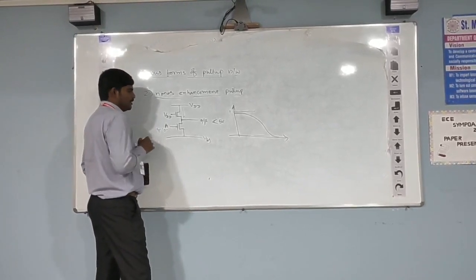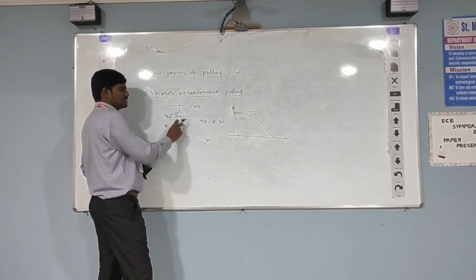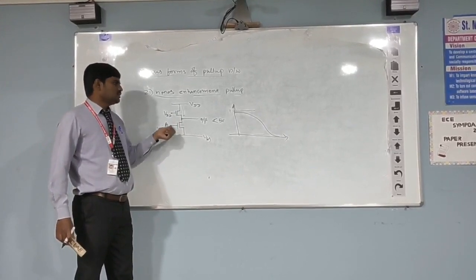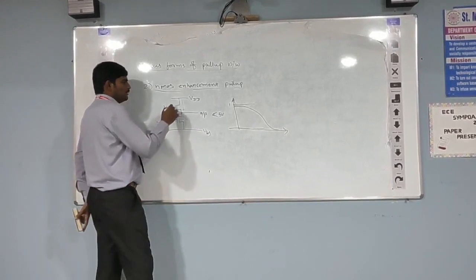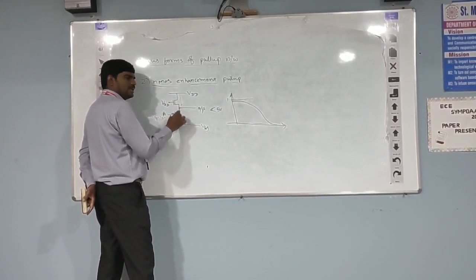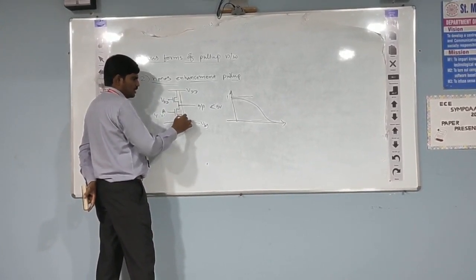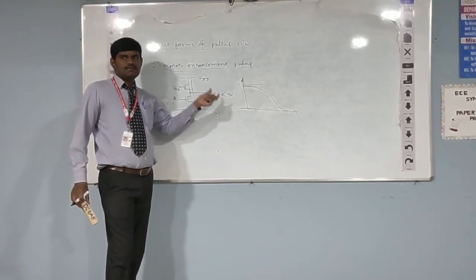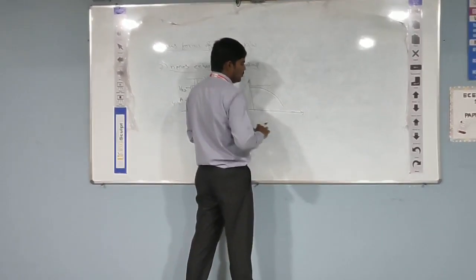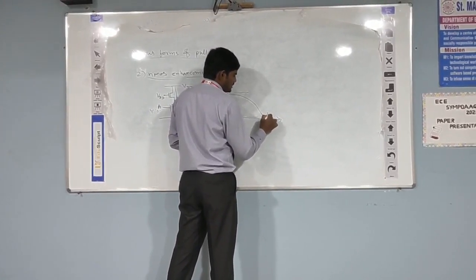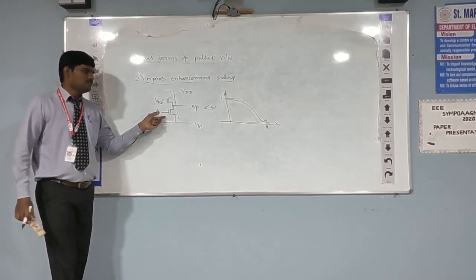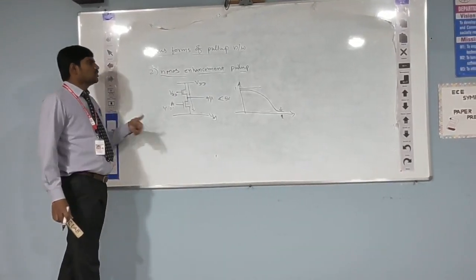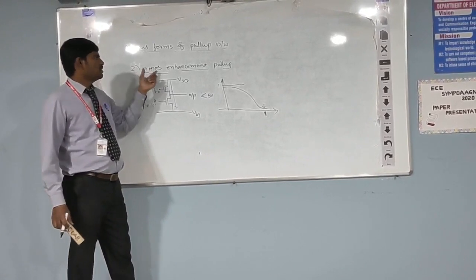Now, when logic 1 is supplied, this pull-down transistor gets turned on. Because it is an N-MOS transistor, after the threshold voltage it is going to start conducting. Since the pull-up transistor is already on and the pull-down is also now on, the entire path goes to ground and the output is pulled low. But still, the output is not going to reach exactly 0 — you are going to receive something close to the threshold voltage of this transistor at the output. So, even logic 0 is not exactly 0 in this case, which is the problem with N-MOS enhancement mode pull-up.